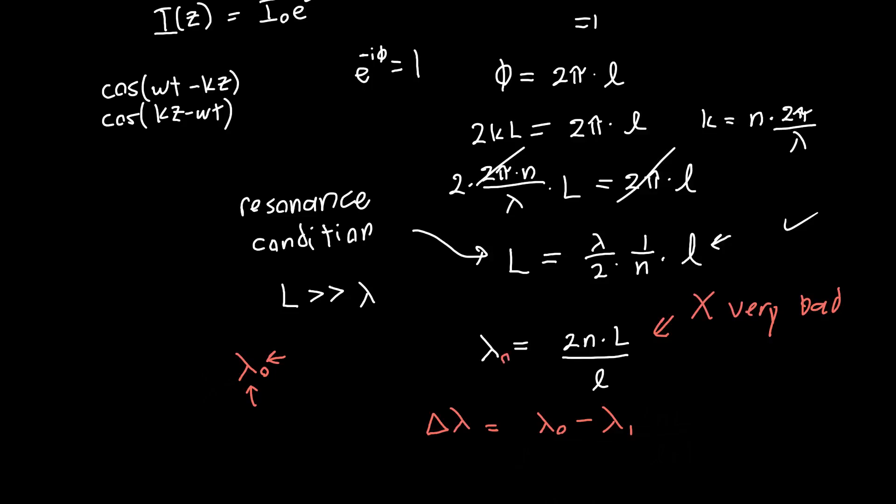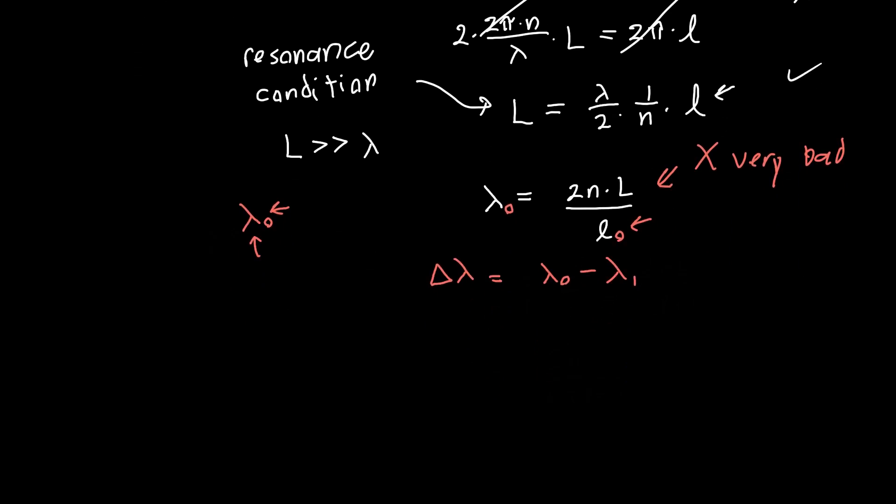And so let's say that this here is lambda naught. And this integer is some l naught. We don't know what it is, but it's going to be an integer. And so just blindly writing out what the equation for lambda naught is, it's just 2 times n times the length of the cavity divided by l naught. And then our next mode is going to be,